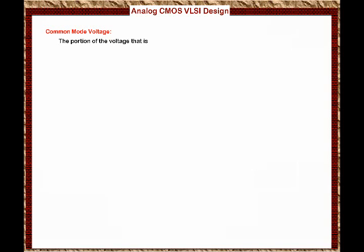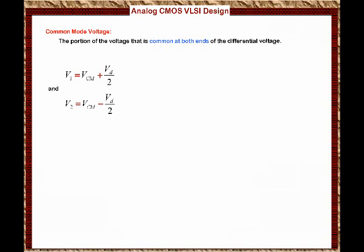The common mode voltage is basically the portion of the voltage that is common at both ends of the differential voltage. For example, V1 will equal V_cm plus VD over 2, while V2 will equal V_cm minus VD over 2. The physical interpretation of these equations is as follows: if you have a circuit like the one shown, you can see that we have V_cm at the bottom.